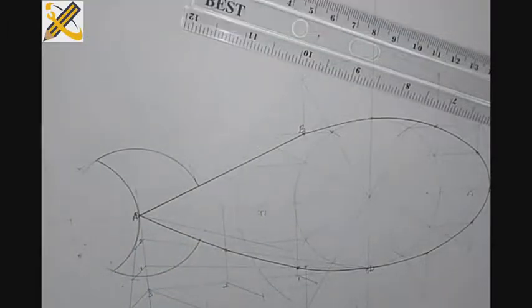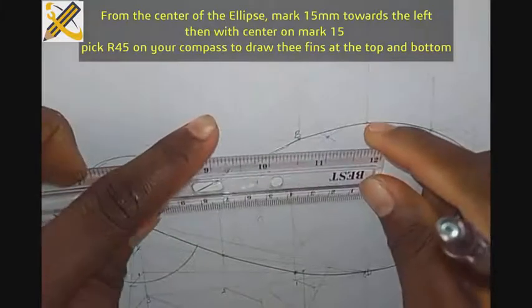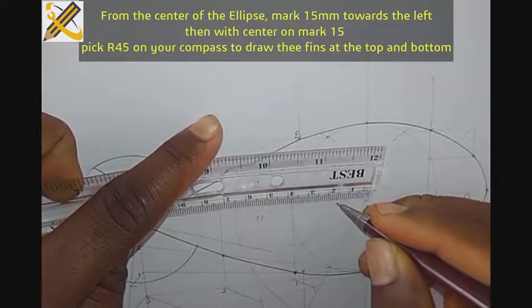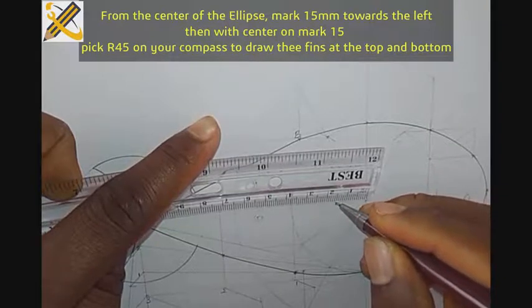So what are we left with? We are left with the yellow portion of the fish. So let's get the fins now. So from the midpoint here, the mark there is 15. And this is the mark 15 here.